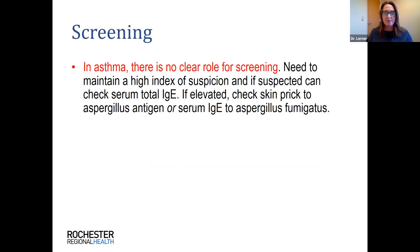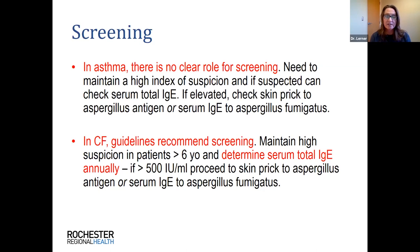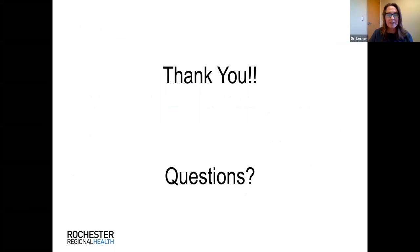For screening: there is no clear rule for screening all asthmatics for ABPA. We recommend maintaining a high index of suspicion in severe asthmatics, those with worsening asthma control, or those who become steroid-dependent — at that point screening with a total IgE or specific aspergillus IgE is recommended. In cystic fibrosis it's a bit different — they recommend screening and a high index of suspicion in patients over six years old, checking total IgE once a year.